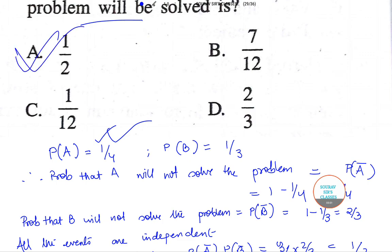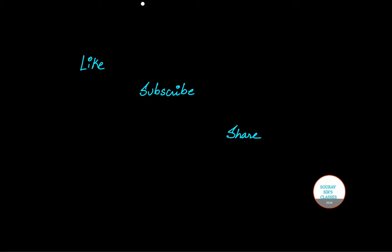The answer is one half, which corresponds to option E. With this we wind up today's tutorial. I hope this short tutorial on UGC NET Economics was helpful. If yes, don't forget to hit the like button, subscribe to our channel, share our videos — and thank you so much for watching.